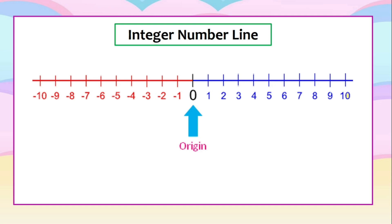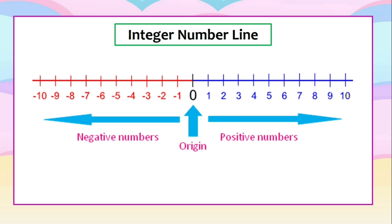Always remember, 0 is the origin, which means when drawing a number line, we always start with 0. All the numbers to the right are all positive numbers, and all the numbers to the left are negative numbers. The arrows represent that these numbers are never ending — it doesn't stop at negative 10 and 10. The numbers to the right of the origin are positive and more than 0, while numbers to the left are negative and less than 0.